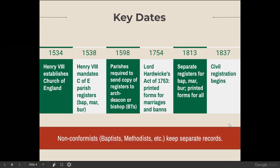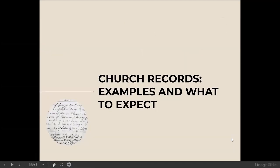All through this time, there were people who did not agree with Henry VIII's establishing his own church, and so they belonged to different churches such as Baptists, Methodists, etc. They were generally known by the term nonconformist because they didn't conform to the established Church of England. These denominations kept separate records. So let's take a look at these records and see some examples of what you can expect from them.